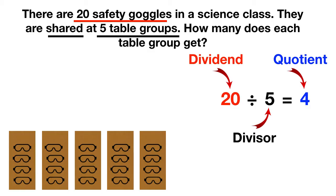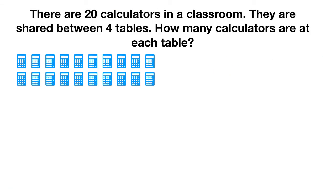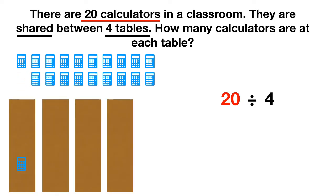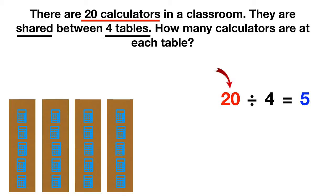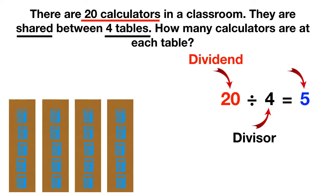Let's look at another. There are 20 calculators in a classroom. They're shared between four tables. How many calculators are at each table? We can see the 20 calculators and write a 20 in our number sentence. They're being shared or divided between four tables, so we're dividing by four. We can see that each table will get five calculators. This 20, the total number of objects, is called the dividend. The four, which is the number of tables or the number we're dividing by, is called the divisor. And the five, the answer, is called the quotient.